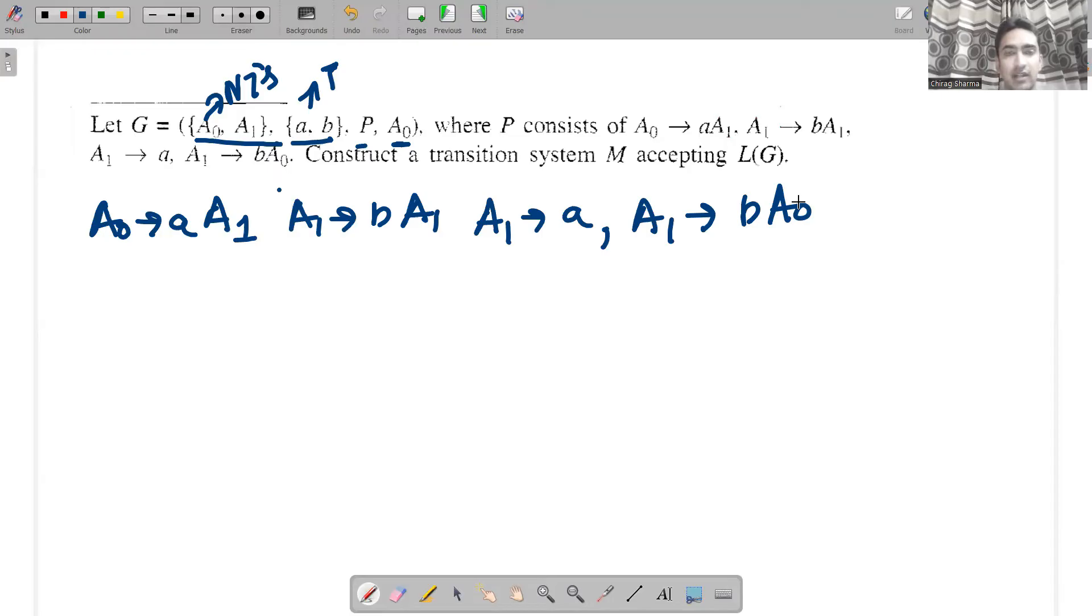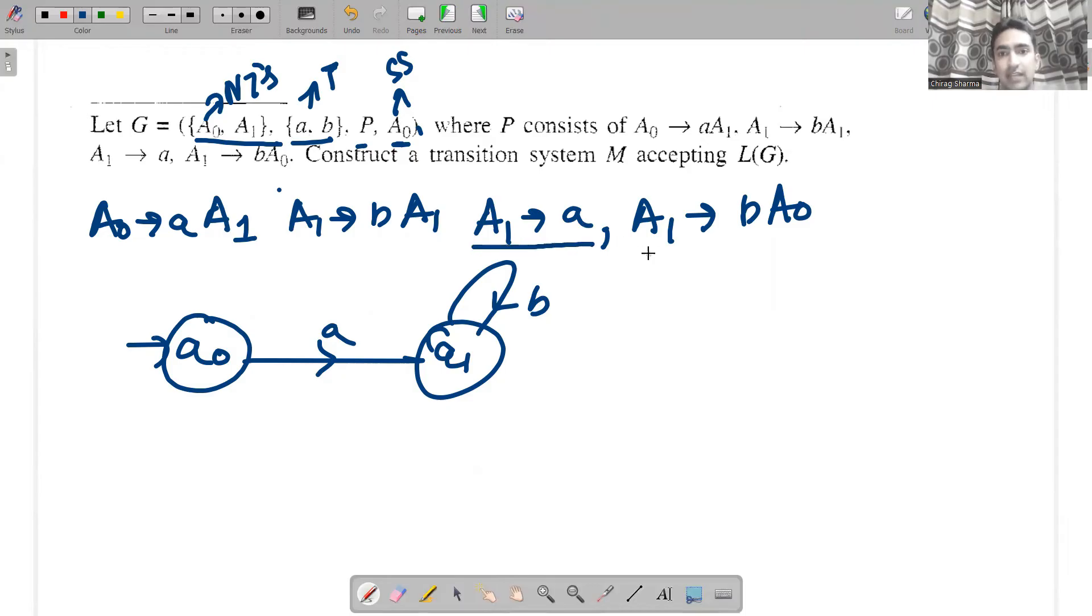How are we going to construct a transition system, whether DFA or NFA? Very simple. We have A0 and A1. The starting symbol is A0. States are represented in small letters. A0 is the initial state. When it is given A, it goes to A1. A1 given B goes to A1. A1 given A reaches final state (we'll think about this later). A1 given B goes to A0.